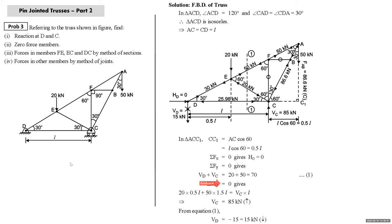For zero force members: at joint B, three members are meeting, no external load, two are in one line, so by Note Number Two, force in member FB is zero. Once FB is zero, consider joint F — now only three members remain: AF, FE, and FC. Two of these three are in one line, so by Note Number Two, force in member FC is zero. So in this truss: FB and FC are zero force members.